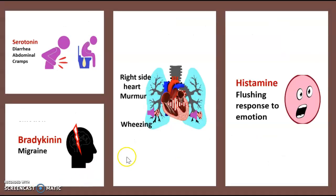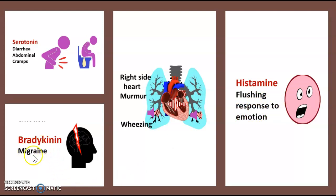A brief review: symptoms linked to serotonin include diarrhea and abdominal cramp. If linked to histamine, flushing in response to emotion. If linked to bradykinin, migraine, right-sided heart murmur, and pulmonary wheezing.